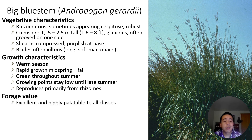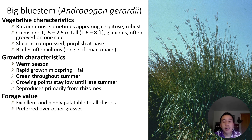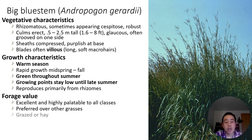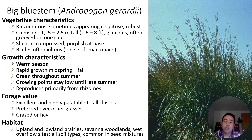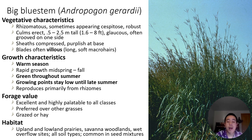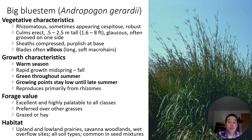In terms of forage, it makes really excellent forage because it's highly palatable to all livestock and wildlife. It's often preferred over other grasses — it's one of those ice cream plants we discussed this week. It's a really excellent forage species, great grazed fresh or turned into hay. In terms of habitat, it typically occurs in upland and lowland prairies, as well as savanna woodlands and wet overflow sites, tolerating all soil types. It's also very commonly used in seed mixtures because it is really great forage.